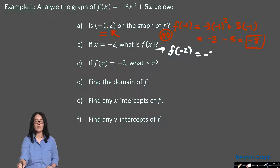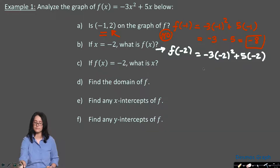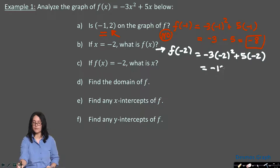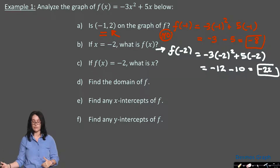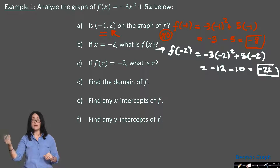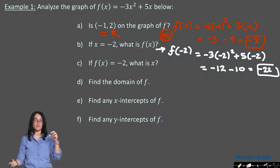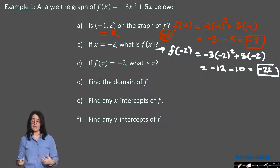Part b asks: if x equals negative 2, what is f of x? That's simply asking you to find f of negative 2. You'd compute negative 3 times (−2)² plus 5 times (−2). Negative 2 squared is 4; times negative 3 is negative 12. Then 5 times negative 2 is negative 10. The output is negative 12 minus 10, which is negative 22. So the point on the graph is (−2, −22) — when x is negative 2, the output is negative 22.